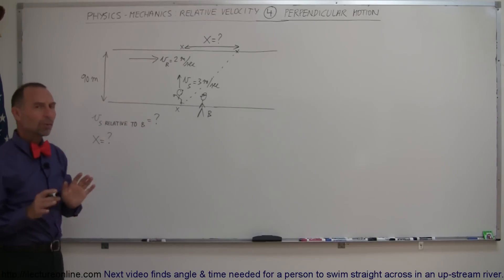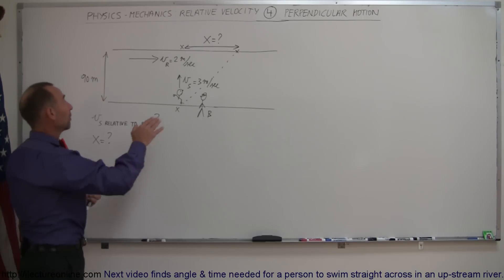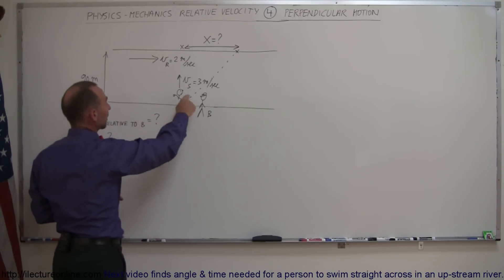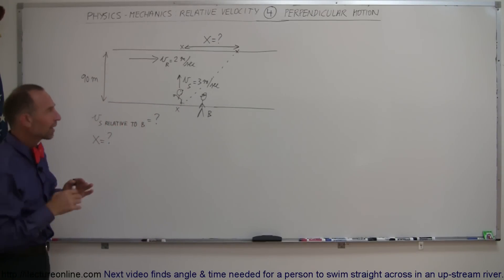Okay, the best way to do a problem like this is to use vector quantities. You want to draw the vectors that represent the velocity of the river. You want to draw a vector that represents the velocity of the swimmer and you want to make the length of the vector proportional to the velocity of the swimmer and the velocity of the river.